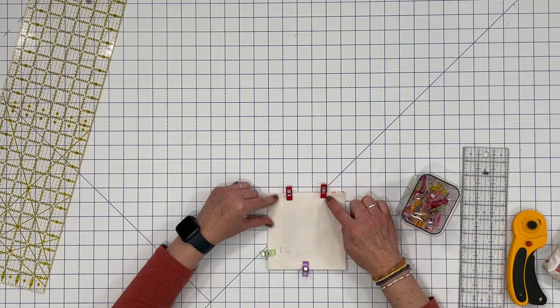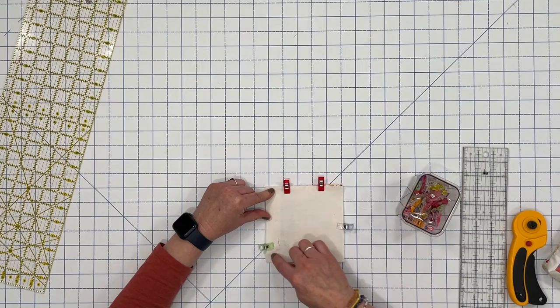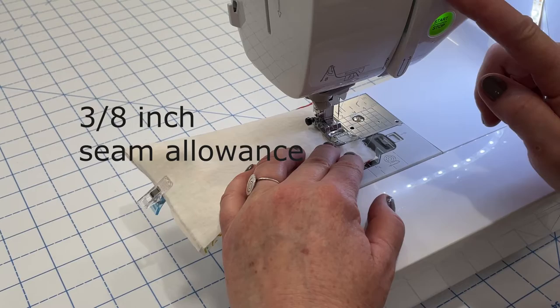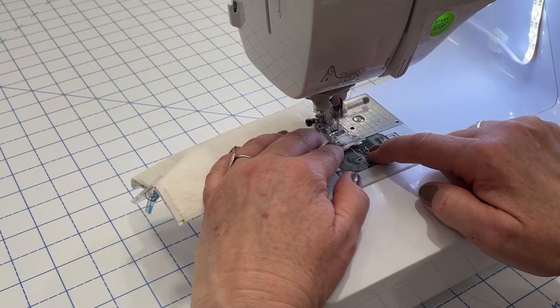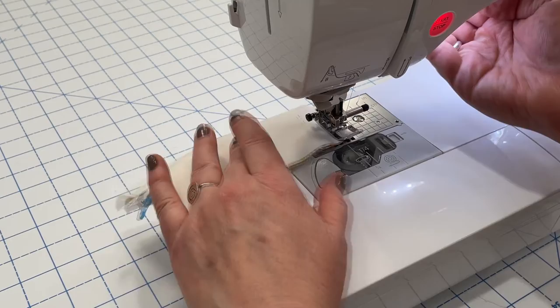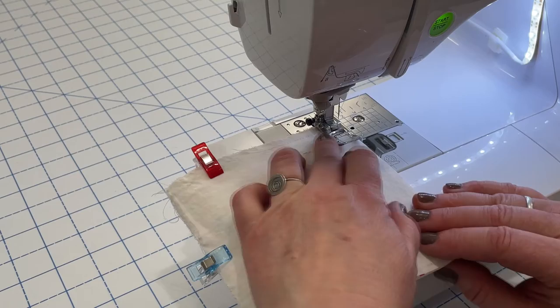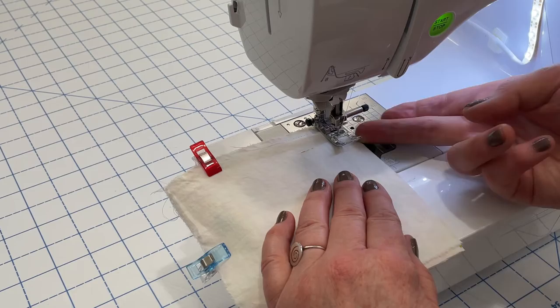It doesn't have to be exactly two inches but we need to leave a section about that big open. Just take it to the sewing machine, we're going to start at one of these red clips, take it off of course, and sew around the edge and stop here. When you get to the corner, leave the needle down, lift up the presser foot and pivot.